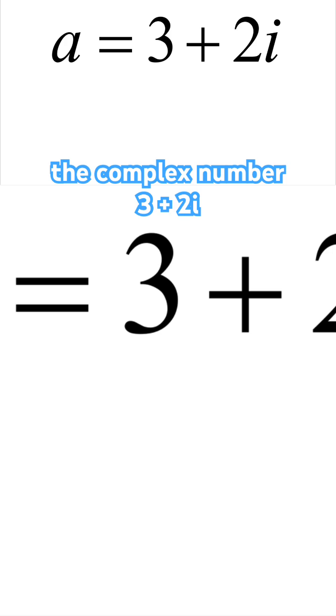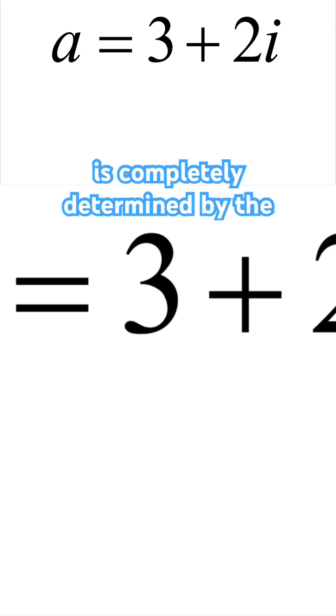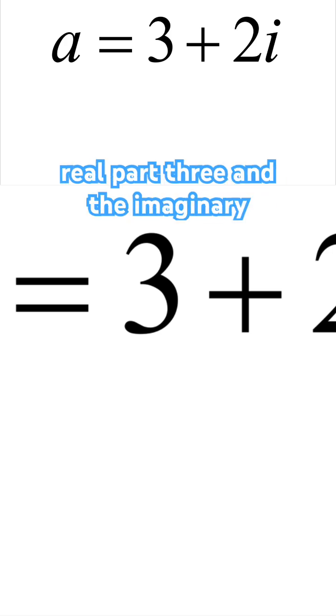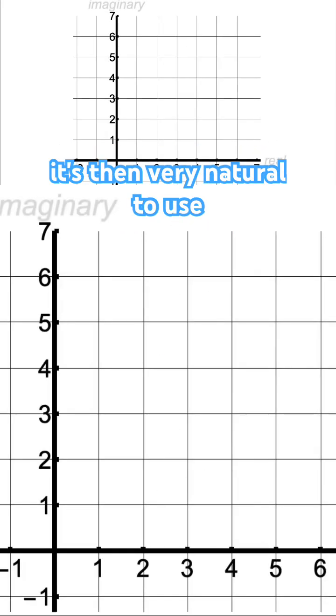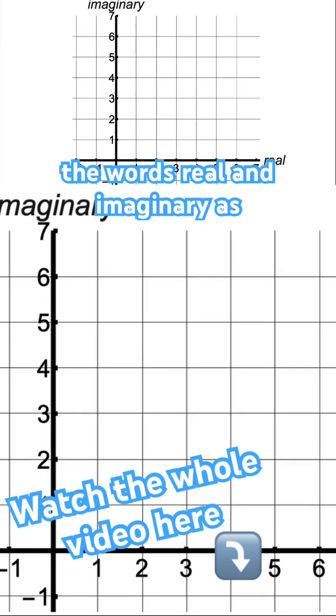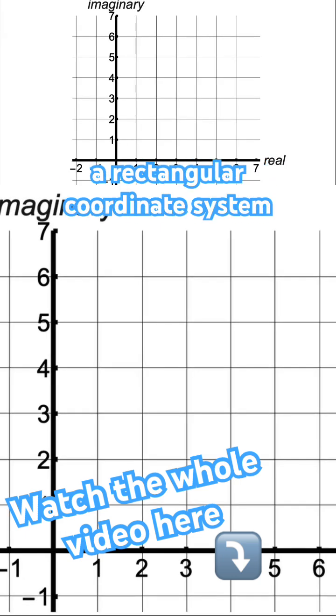The complex number 3 plus 2i is completely determined by the real part 3 and the imaginary part 2. Therefore, those numbers can be thought of as rectangular coordinates. It's then very natural to use the words real and imaginary as the labels for our axes in a rectangular coordinate system.